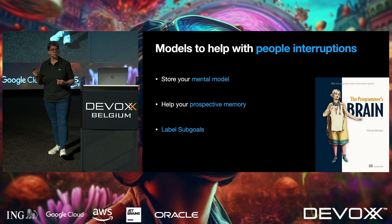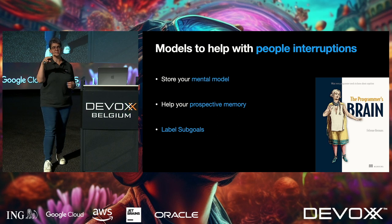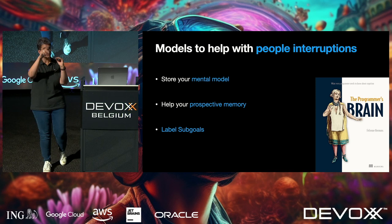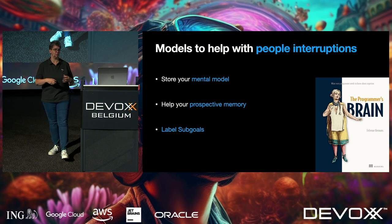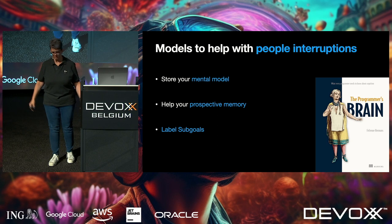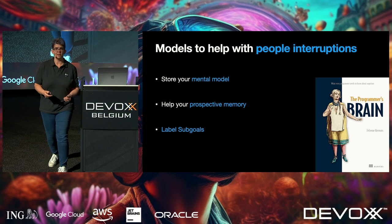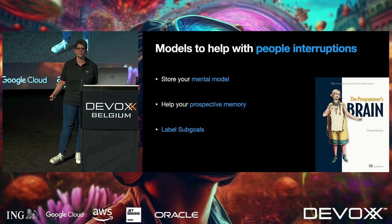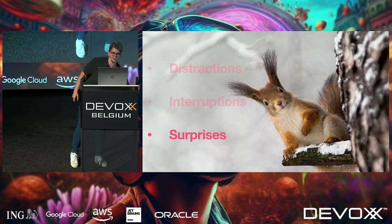Third tip: if you're serially interrupted, before you even start the task, break it into tiny sub-goals — step one, step two, step three. If someone interrupts you at step six, you know steps one to five are done, step six is in progress, and steps seven through ten are still to go. We can't stop people interrupting us — many of us work in collaborative spaces. People will ping us, email us, sidle up to us with cake. But we can help our brain save its context.